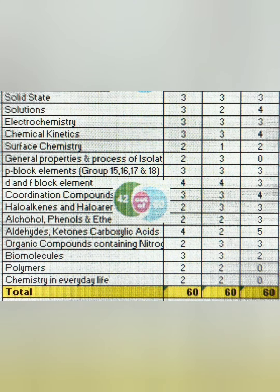Now moving to Class 12 chapters. Solid state: three questions are asked every year, so prepare it well. Solutions: four questions were asked last year, so prepare it well. Electrochemistry: three questions every year — spend a good amount of time on this, as it's also an easier chapter. Chemical kinetics: up to four questions can be asked, making it an important chapter. General chemistry: two questions, typically easier to complete. General properties and processes of isolation: two to three questions were asked previously, but due to syllabus reduction there were no questions last year — still, prepare this topic.